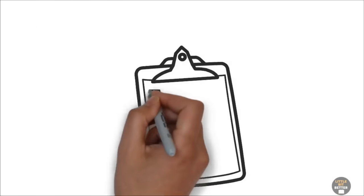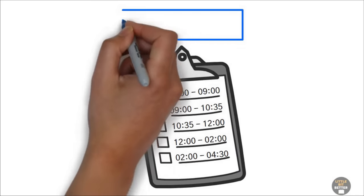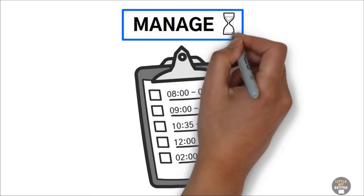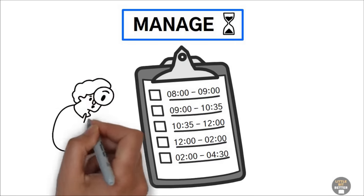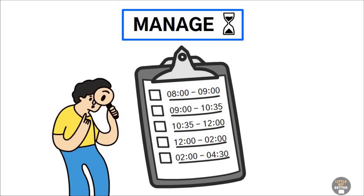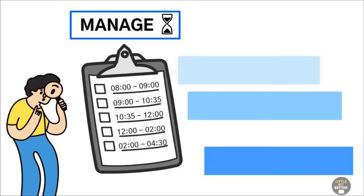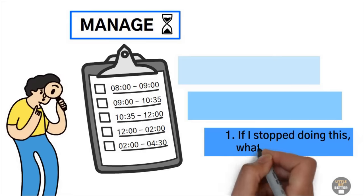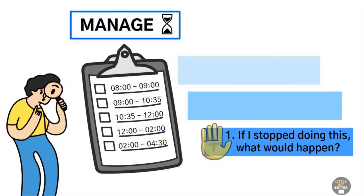Okay, let's say you tracked your time for one week. The list of tasks you spend your time on is in front of you. What's next? The next step is to manage your time. Managing your time means looking at your list and eliminating unproductive ones. To do this, ask three questions. One, if I stopped doing this, what would happen? If nothing, then stop.